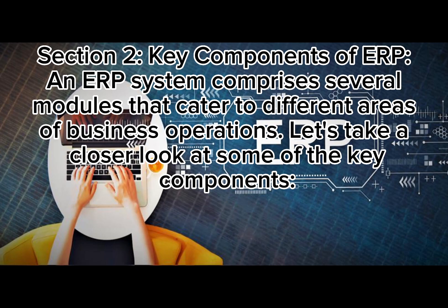Section 2: Key Components of ERP. An ERP system comprises several modules that cater to different areas of business operations. Let's take a closer look at some of the key components.